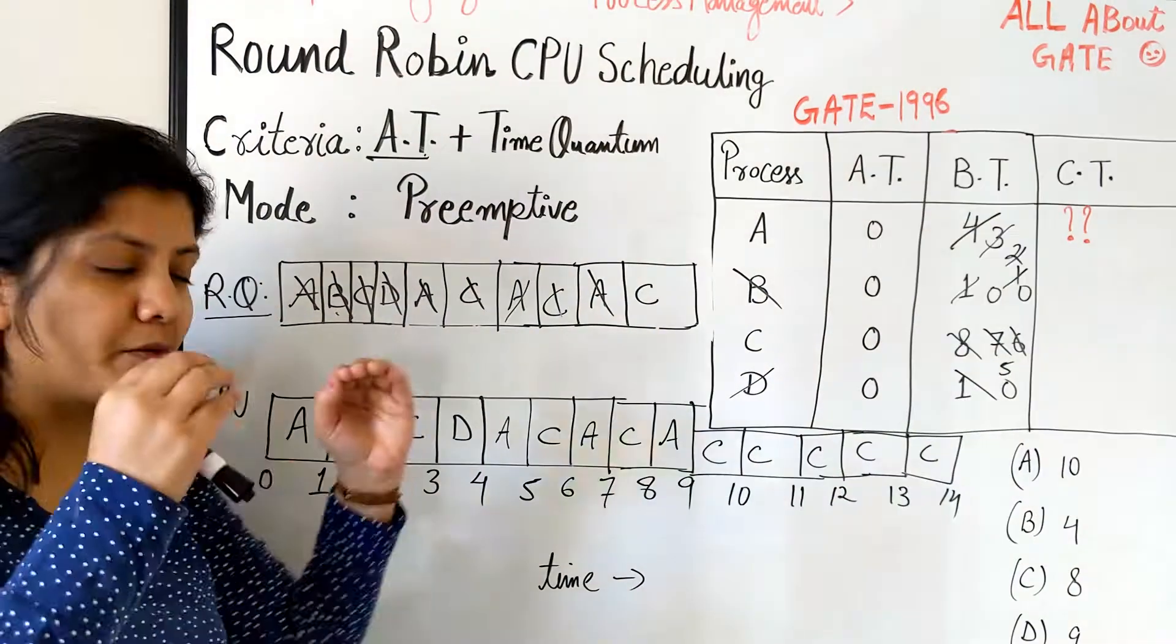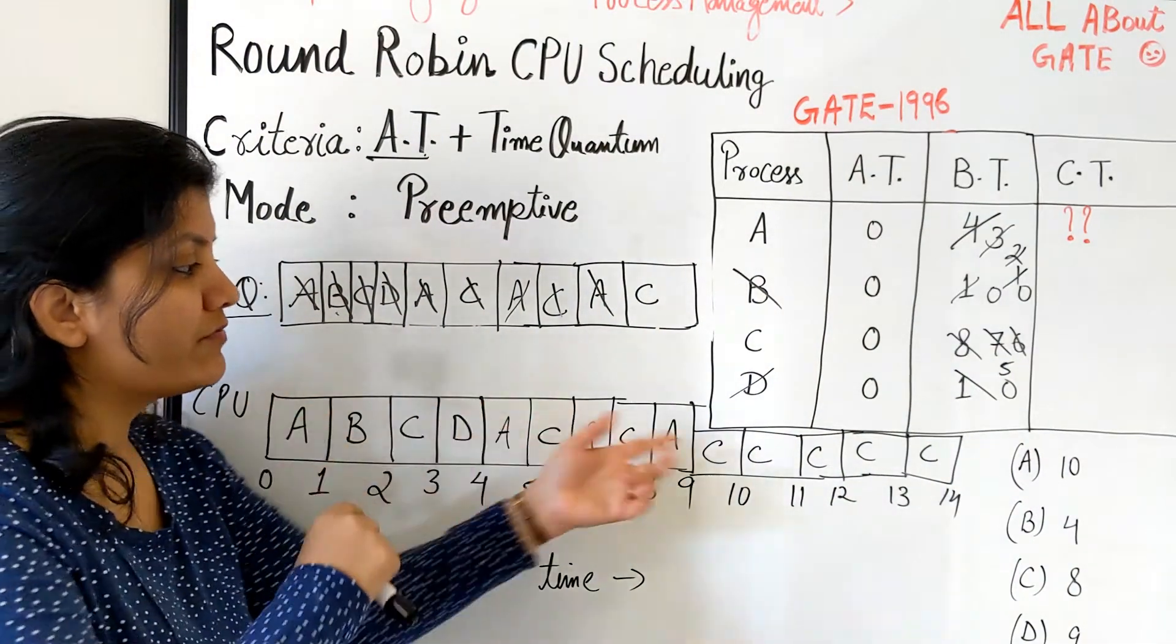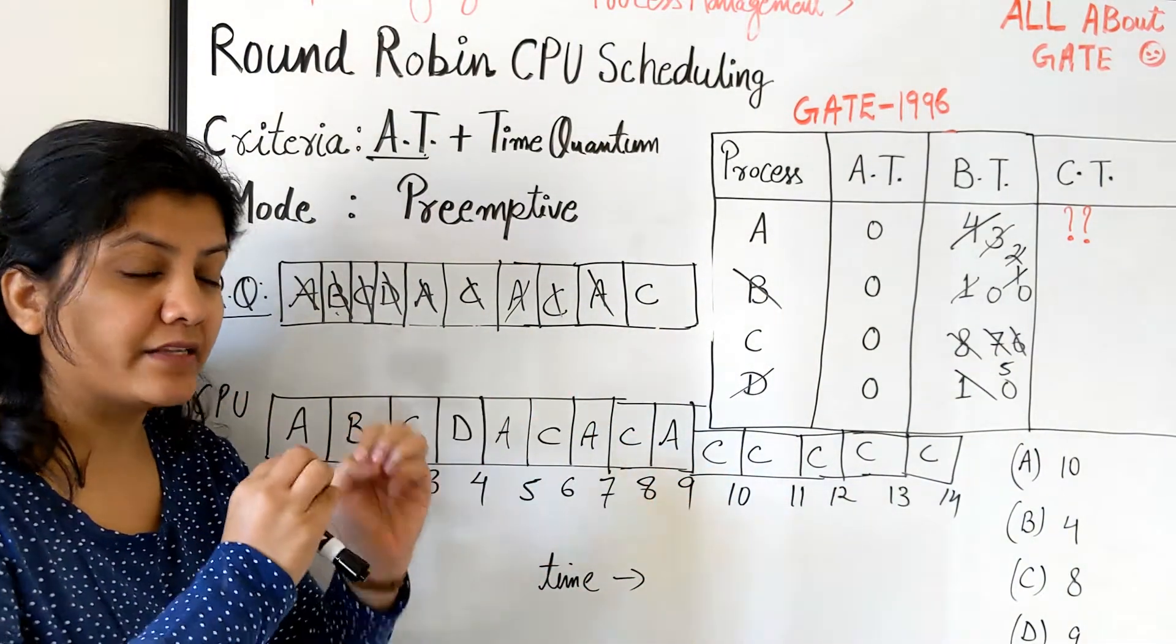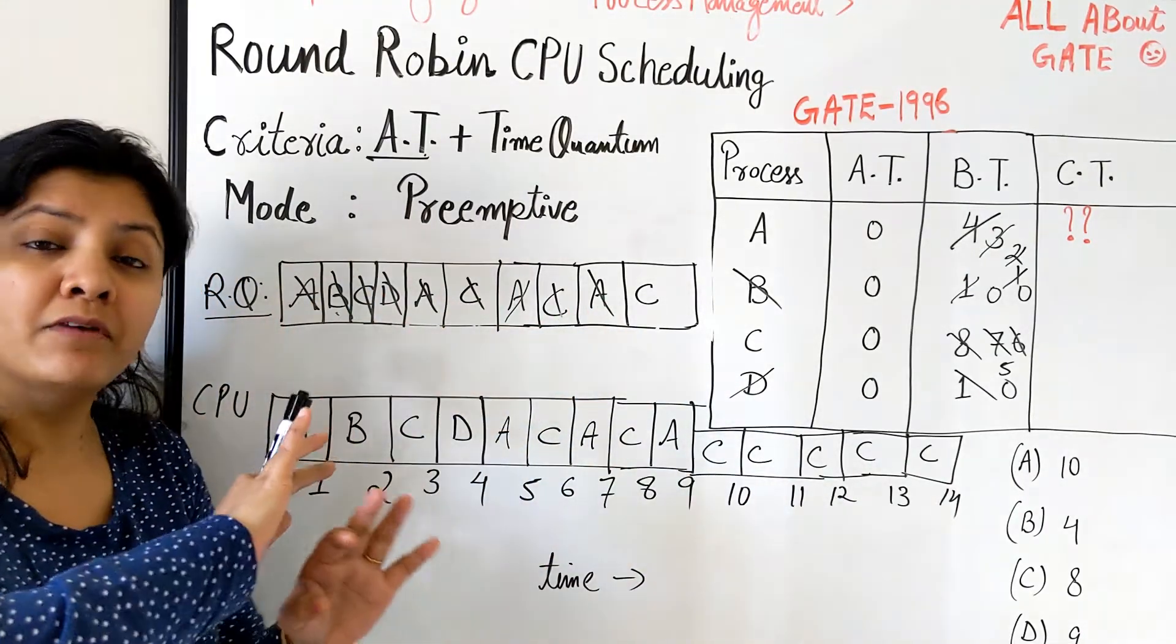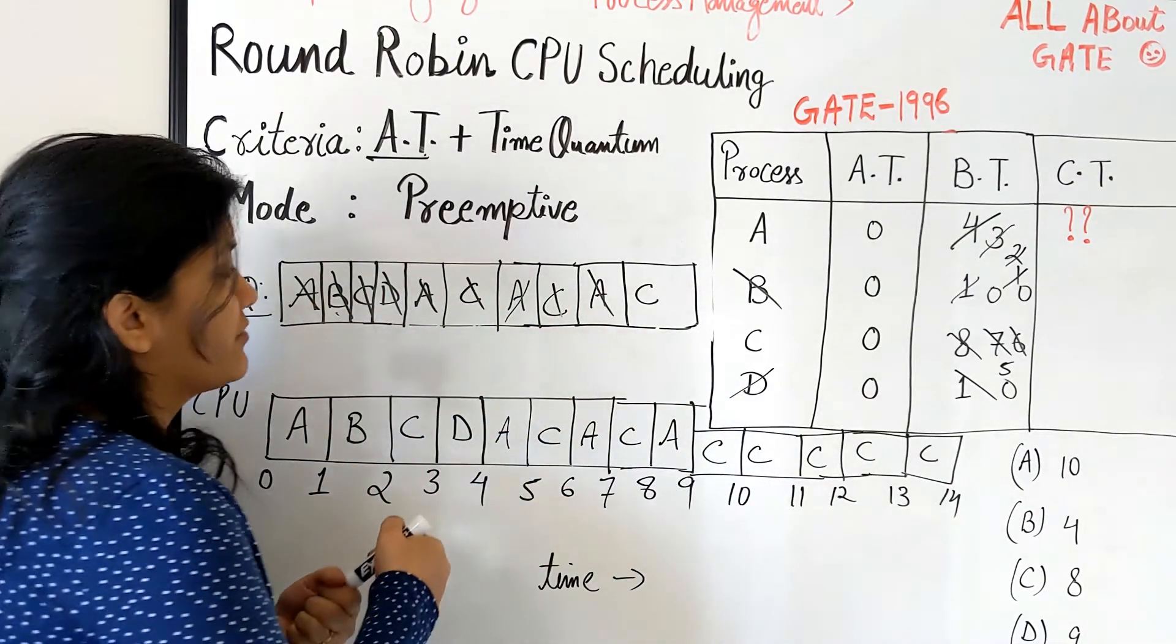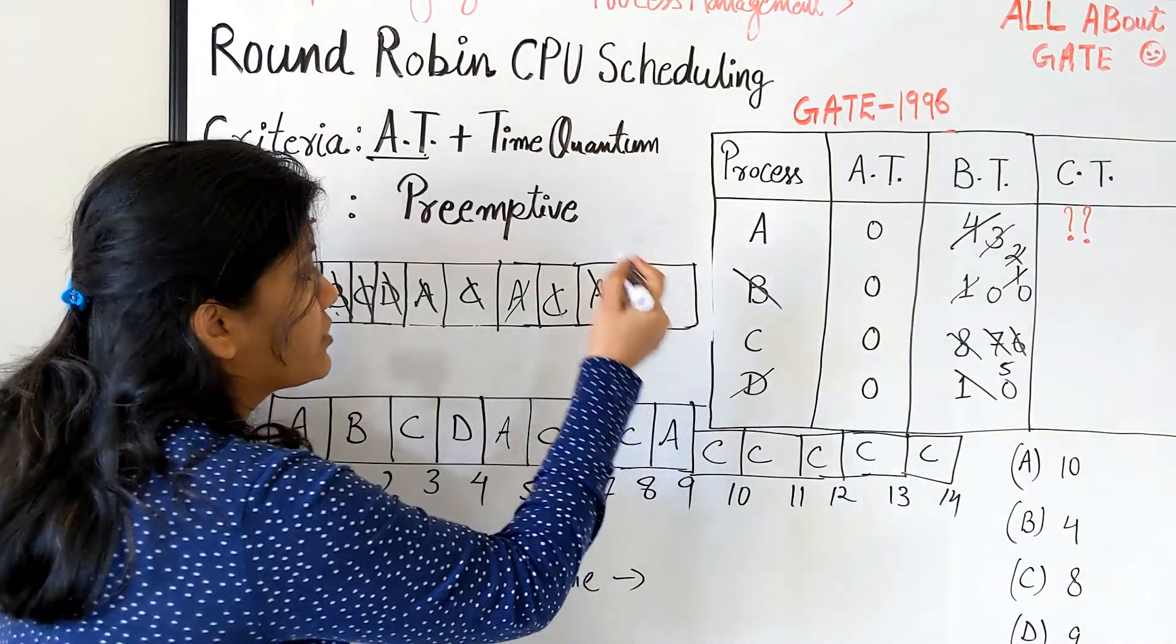And lastly 14. So 1, 2, 3, 4, 5. Somebody might be thinking why are we giving all the 5 slots continuously to C at the same time. Why? Because we don't have any other process. All the processes have got finished. So now this is finally that we say C is also actually finished.